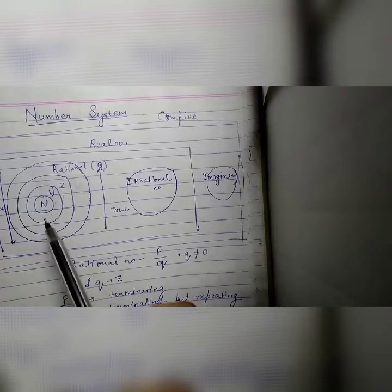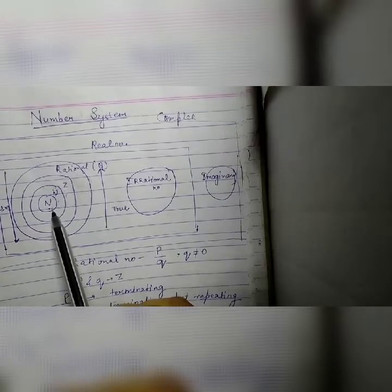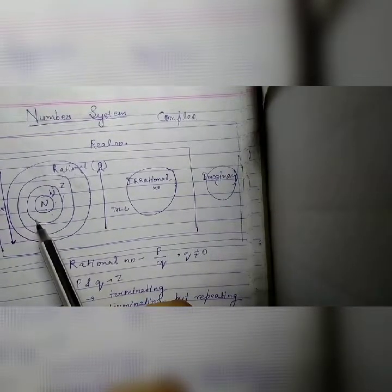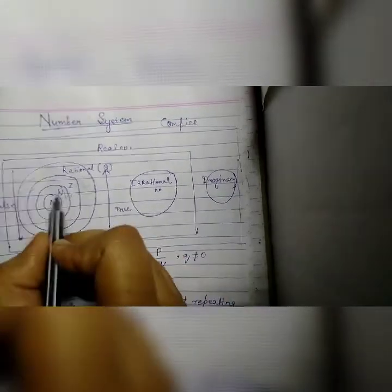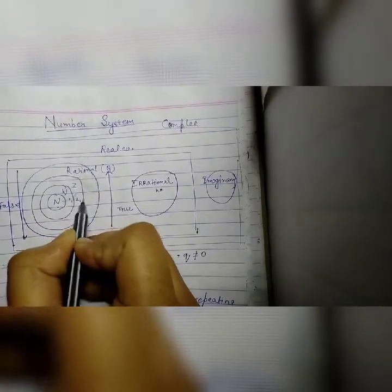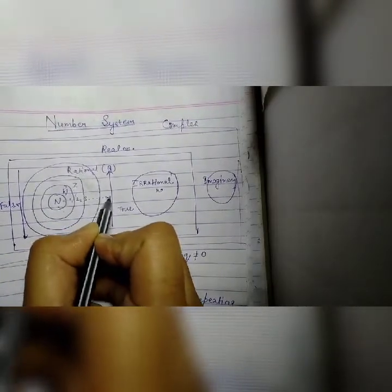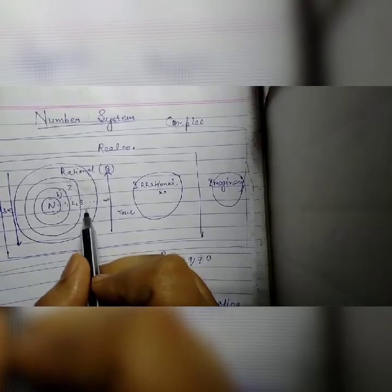First of all, natural numbers. Natural numbers are which numbers? 1, 2, 3, dot dot dot goes to infinity. These are all natural numbers.